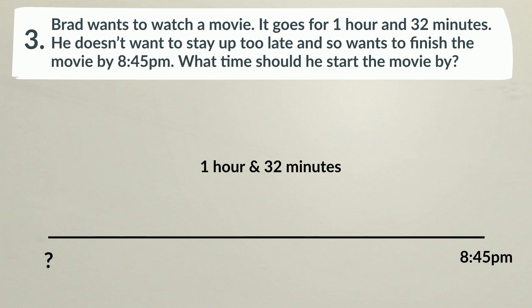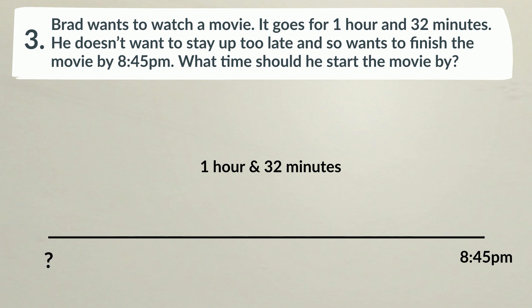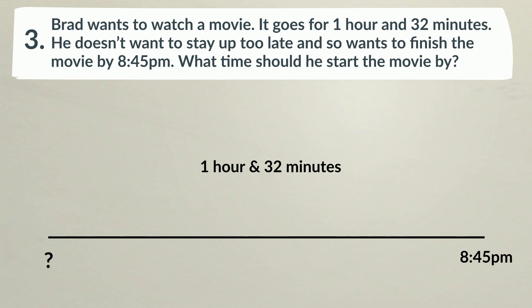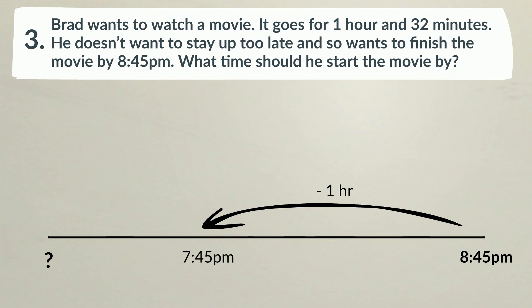Notice that in this problem we'll be starting at the end of our timeline — we're going to be working backwards. That means we'll be subtracting time instead of adding. Jumping all of this in one go might be a bit tricky, so let's break our elapsed time into chunks. We'll start by subtracting 1 hour. 8:45pm take away 1 hour is 7:45pm.